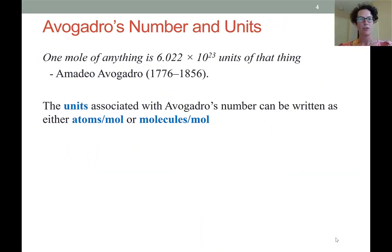Amadeo Avogadro wanted to be able to have some sort of reference that he could use to determine how many particles were within an amount of matter. This is because when matter interacts, it's at the particle level, at the atomic or molecular level, not at the level that we can most easily perceive, which is in terms of grams. When dealing with Avogadro's number, the units we're going to be looking at are written as either atoms per mole or molecules per mole. We're thinking about the smallest individual unit that is undergoing a chemical reaction.